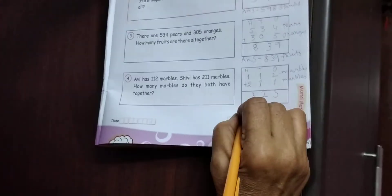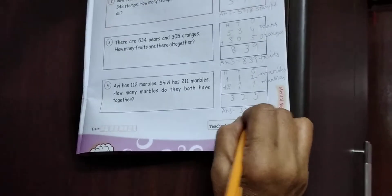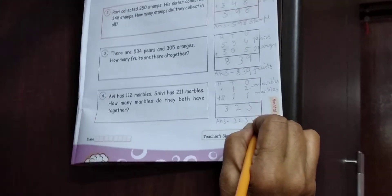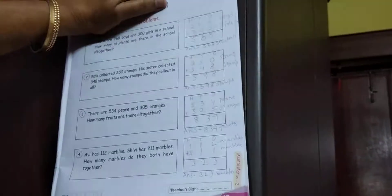Students, answer likho. A, N, S. 323. 323 kya? Marbles? M, A, R, B, L, E, S. Very, very carefully. Look at the page.